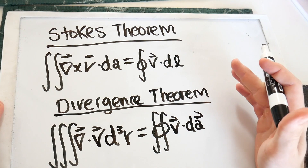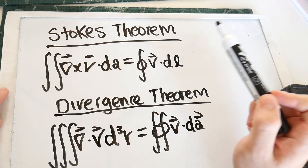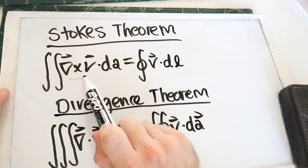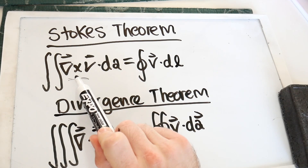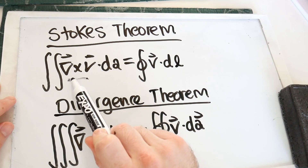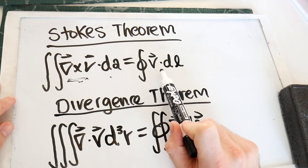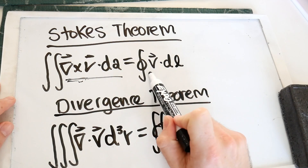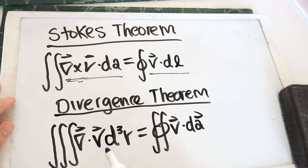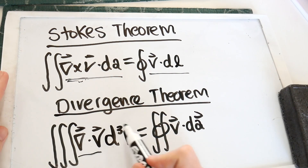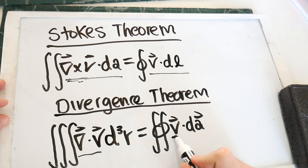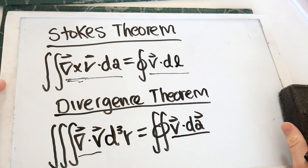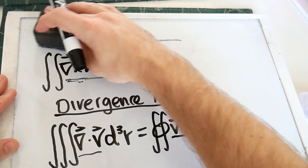Two things to point out: with Stokes' theorem, you're always dotting into that infinitesimal area because we're taking the curl of two things. Taking the curl is similar to doing a cross product, and a cross product yields another vector. To get rid of that vector, we dot it into an area, giving us a scalar equal to a scalar. In divergence theorem, we start with divergence, which immediately gives us a scalar — not dotted into the 3D volume element, just multiplied by it. On the right-hand side we also get a scalar because we get a vector dotted into another vector.